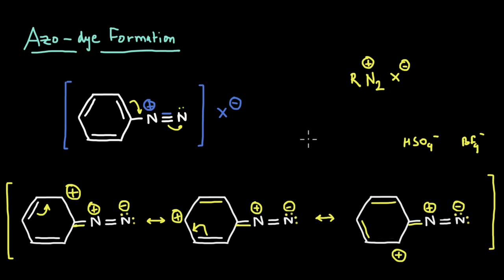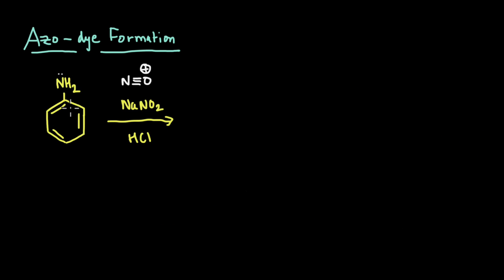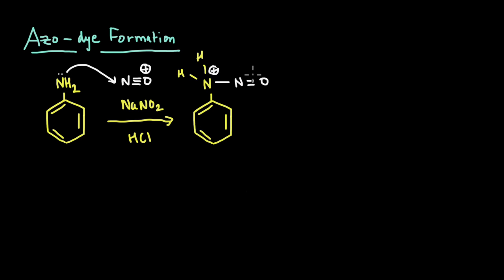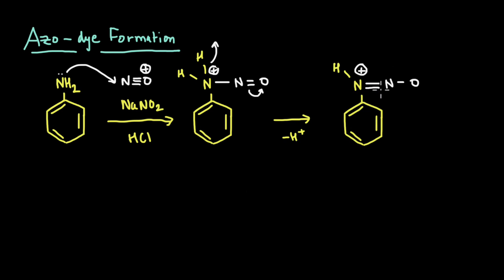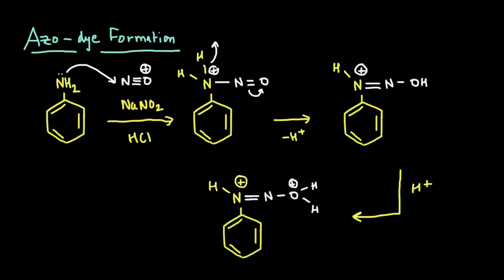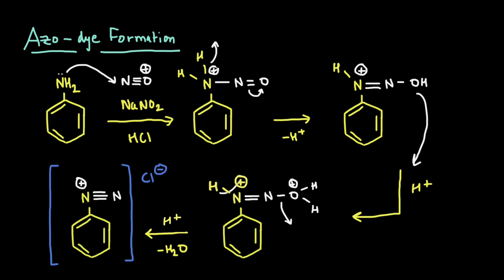Now let's see how these diazonium salts are formed. To form our diazonium salt, we start with aniline and react it with NaNO2 and HCl. These reagents give us the nitrosonium ion, and the lone pair on the nitrogen attacks this nitrogen, giving us the NO group added here with a positive charge on this nitrogen. As this bond shifts, the hydrogen leaves and we form a double bond here, with the hydrogen getting attached to the oxygen. Next, this oxygen picks up an H plus from the solution, and when this hydrogen leaves, water leaves, forming a bond between the two nitrogens, giving us our diazonium ion with a Cl negative electrostatically bonded to it.